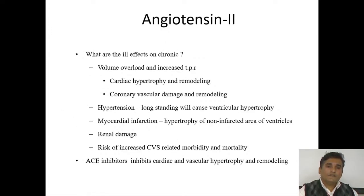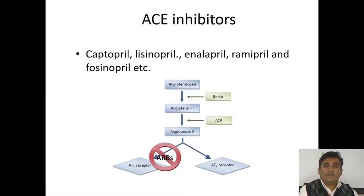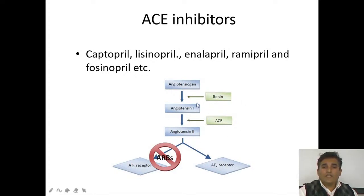Angiotensin-2 may lead to cardiac hypertrophy and remodeling, cardiovascular damage, hypertension, myocardial infarction, renal damage, and increased risk for cardiovascular events. ACE inhibitors — captopril, enalapril, lisinopril — inhibit the ACE enzyme, thereby inhibiting production of angiotensin-2 and all its mediated complications.